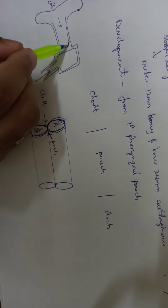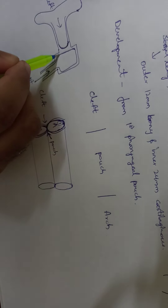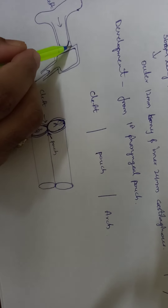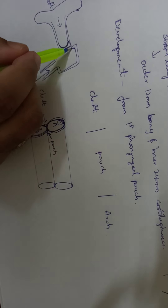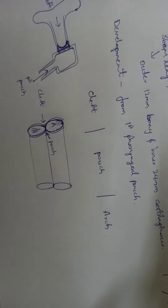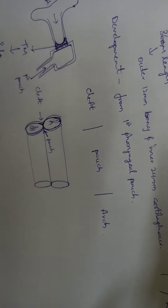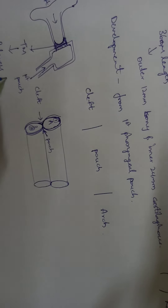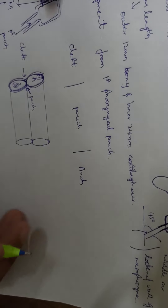In between this outer squamous epithelial layer formed by the ectoderm and the inner endodermal mucosal layer, mesenchymal tissue will proliferate and form a middle fibrous layer. So this squamous layer, middle fibrous layer, and inner mucosal layer — these three will combinedly form a membranous partition, which is nothing but your tympanic membrane. That is why the tympanic membrane has three layers formed from three different germ layers. Now coming to the Eustachian tube opening in the nasopharynx.